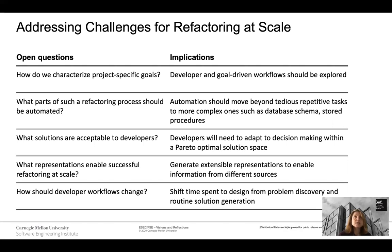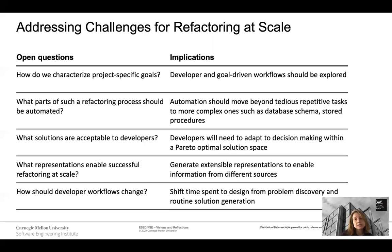A key underlying problem is what kind of representation enables successful refactoring at scale. We need to be able to collect information from different sources and generate extensible representations so that we can support both dependency resolution, database schema resolution, as well as dynamic dependencies that we can capture and resolve in the process of evolution. The developer workflows will change. We're more used to iterative, local, and smaller-scale interactive development driven by IDEs. These kinds of next generation tools will be more decision assistance, where you provide the goal at hand, the tool runs and provides a general set of solutions, and developers select from those solutions. It will shift the time spent in design from problem discovery to routine solution generation, and implementing and testing those solutions after selections have been made.